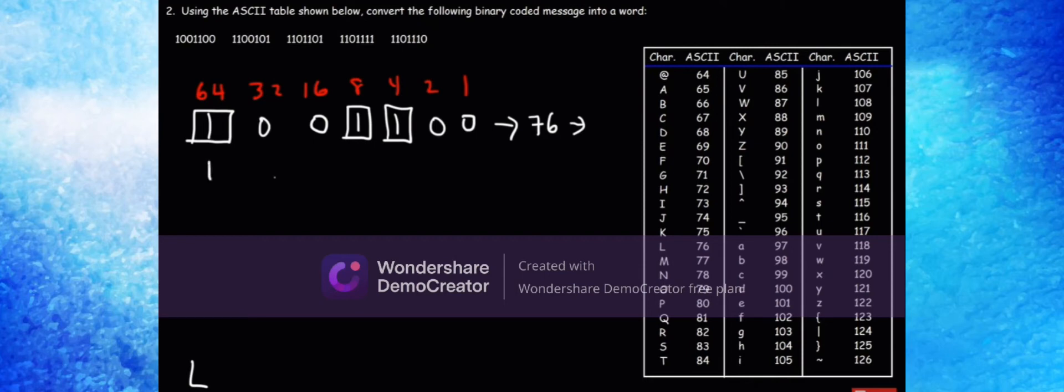Now let's move on to the second code: 1100101. We have 64, 32, 4, and 1. So 64 plus 32 plus 4 plus 1 equals 101, which corresponds to the letter E. So we have a lowercase E now.